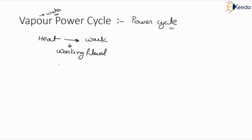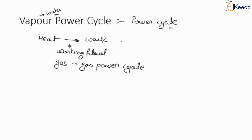If we are using any kind of gas as a working fluid, it will become a gas power cycle. By changing the type of working fluid, we can change the type of power cycle. Here our main working fluid is water vapour, so that is why it is called vapour power cycle.